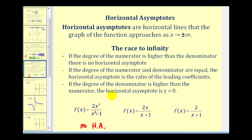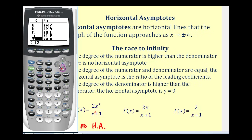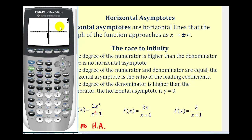We can illustrate this with a graphing calculator. I've already typed the function into y1. Looking at the table, we can see that as x increases, y increases without bound. Looking at the graph, as we move right the graph moves up indefinitely, and if we move left it moves down indefinitely. Therefore, there's no horizontal asymptote.